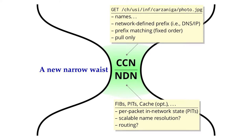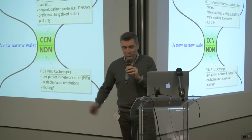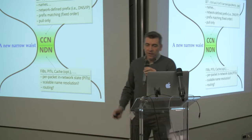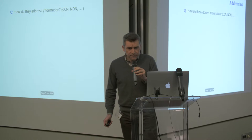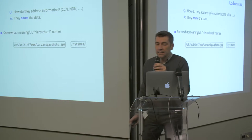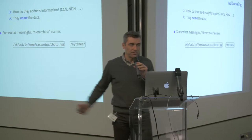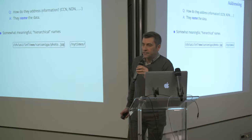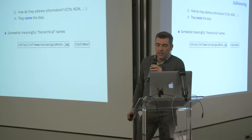Underneath, there's a network architecture with FIBs, pending interest tables, and so on. I want to use this architecture to introduce new ideas. My main criticism — on which the new ideas are based — is on the naming scheme. How do CCN and NDN name data? They name it using hierarchical names, something like the examples on the slides. The nice thing about hierarchical names is that they are familiar to many — the idea of the file system, very similar to that.